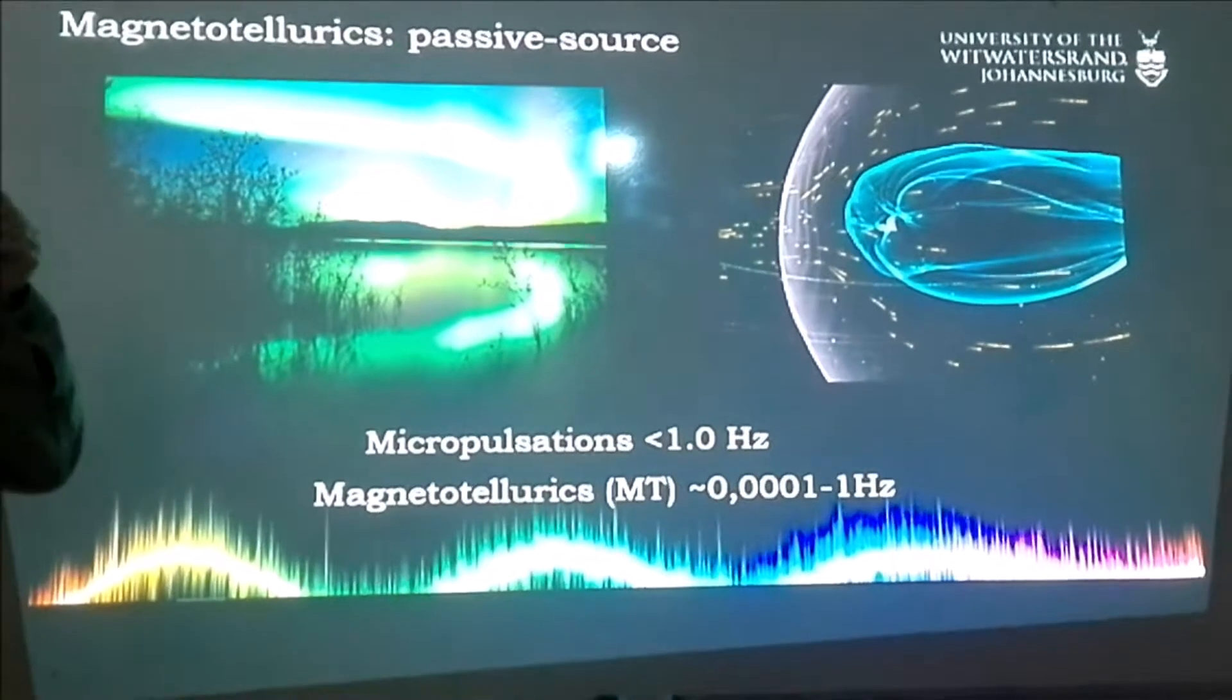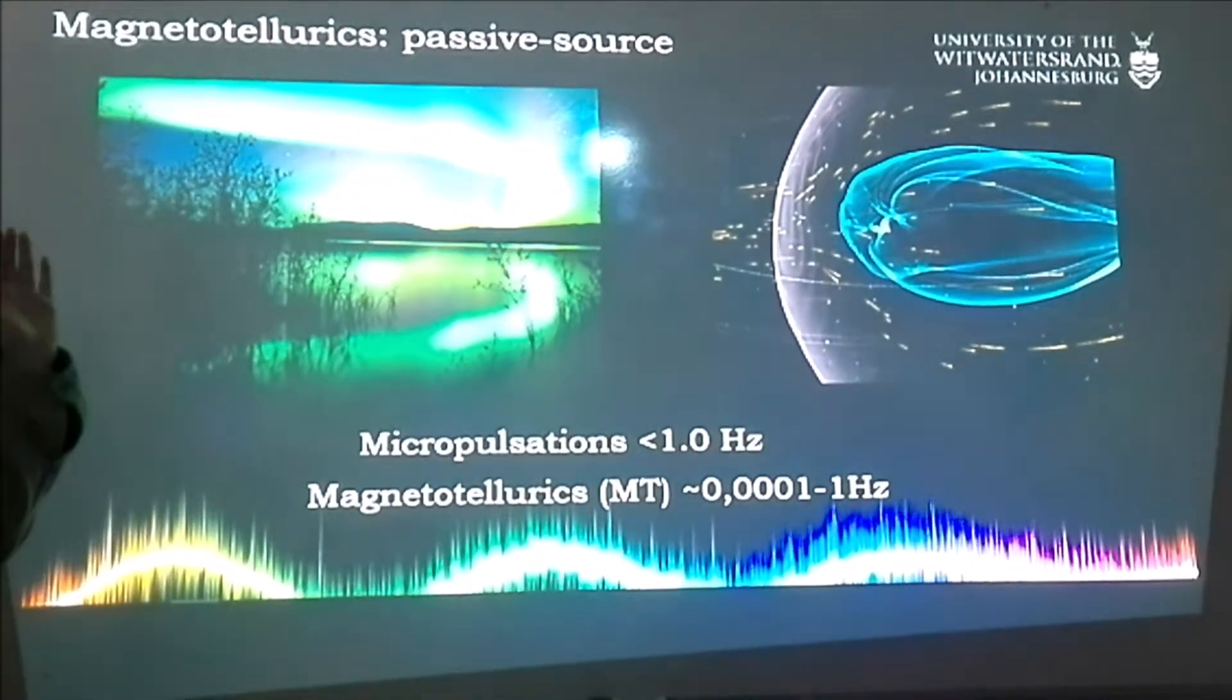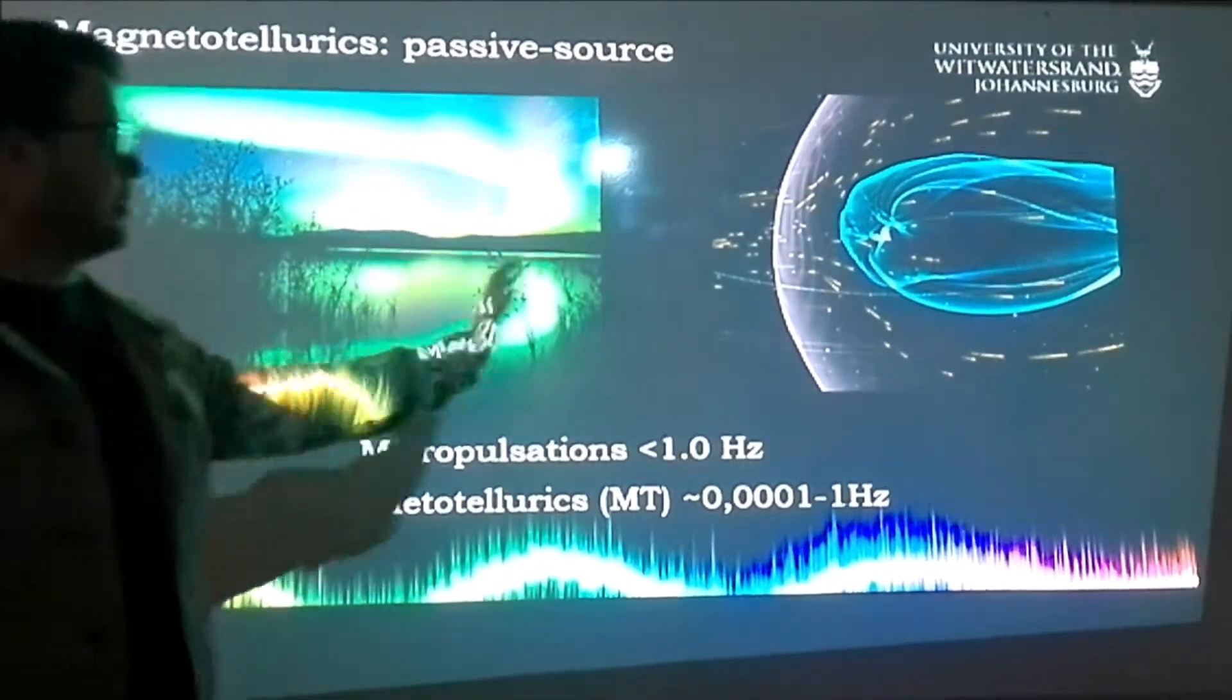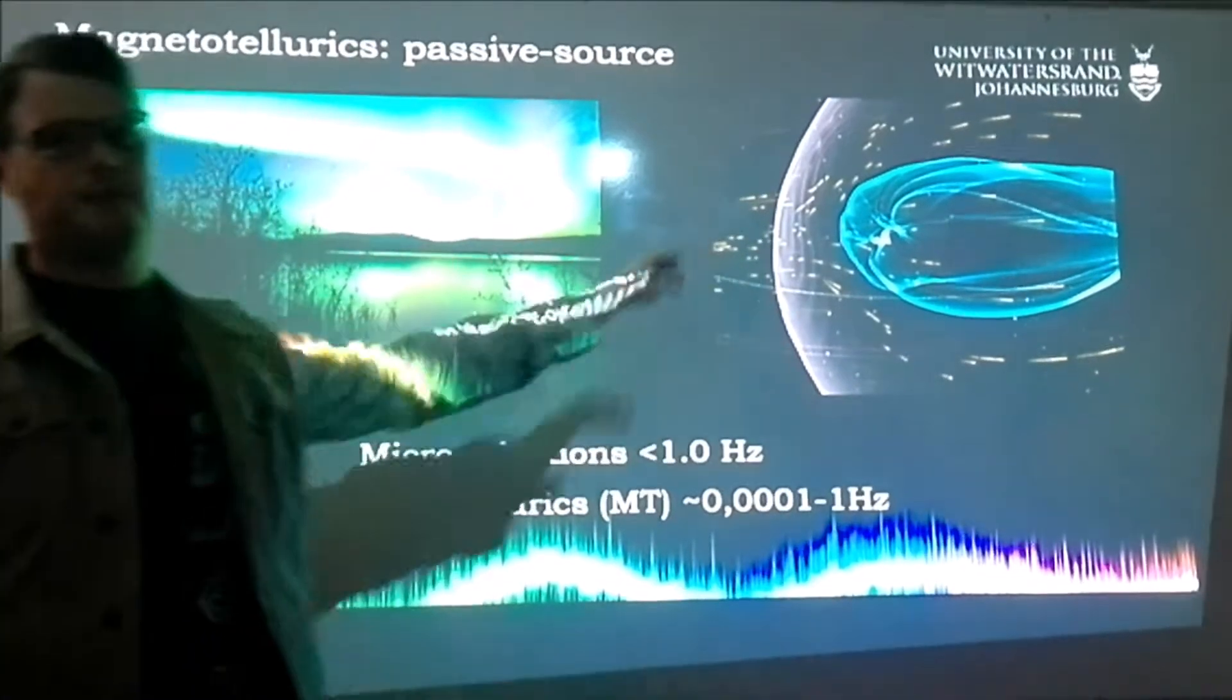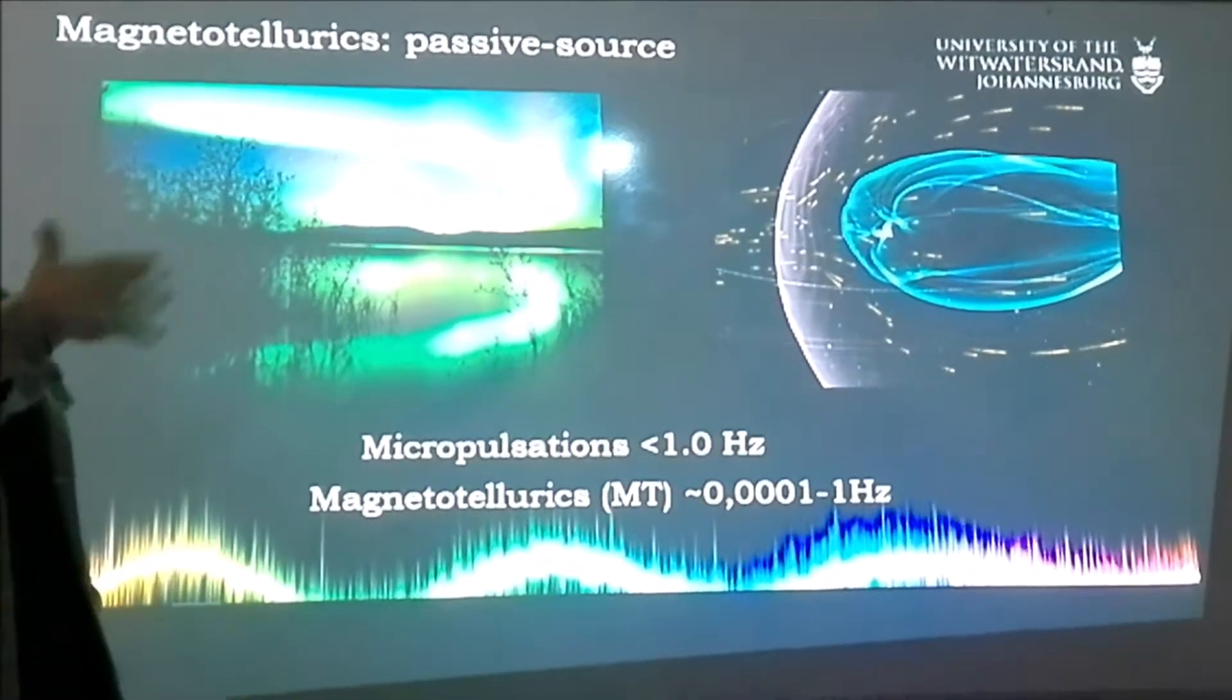And what happens on the sun-facing side of the earth, the solar wind actually compresses the magnetic field. And then on the evening side or the night side, it has a tail, because it doesn't have compression.